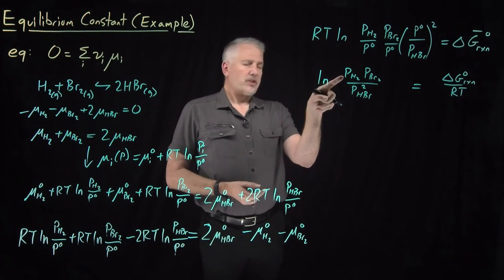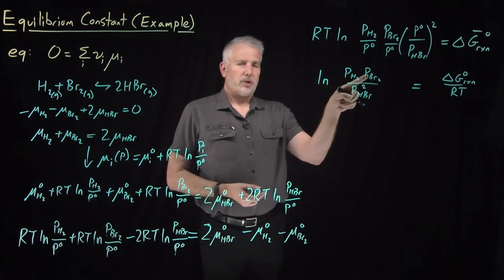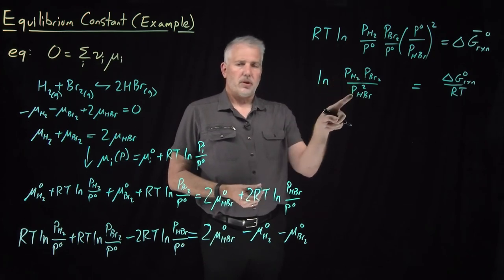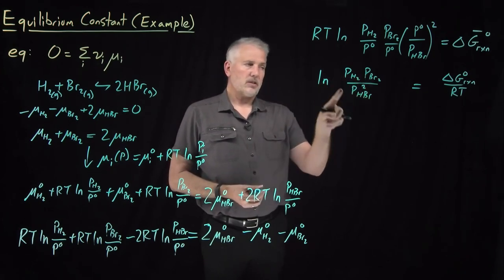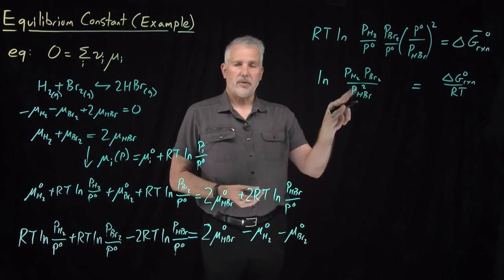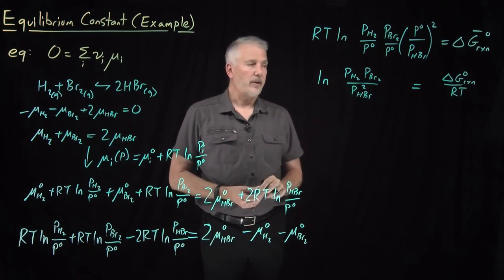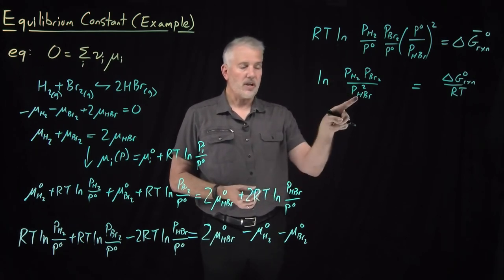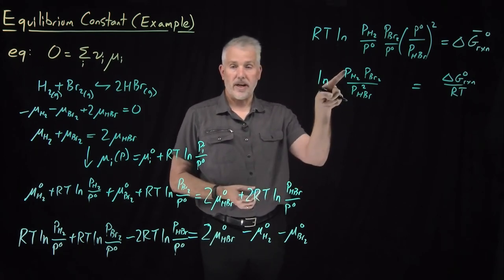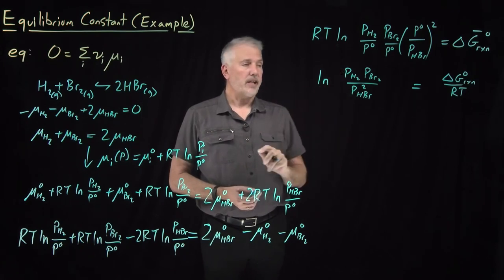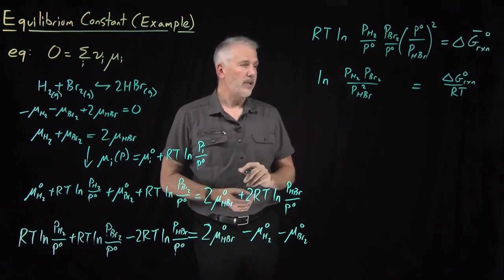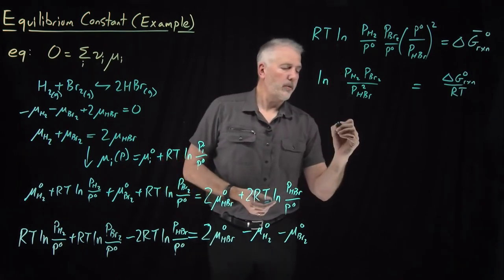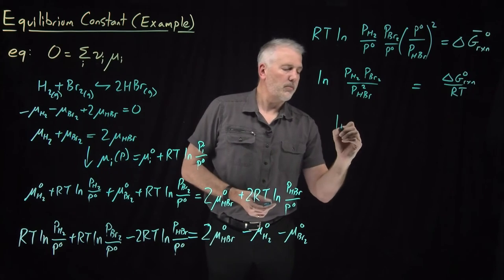This ratio — pressure of H₂ times pressure of Br₂ over pressure of HBr squared — looks nice, except I'd rather have it the other way around with products divided by reactants. Right now it's inverted, so I'm going to rewrite it flipped upside down.